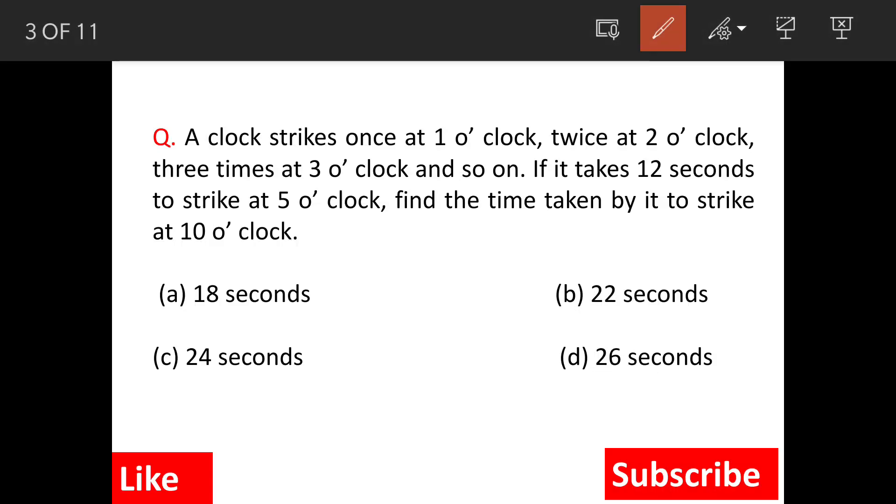A clock strikes once at 1 o'clock, twice at 2 o'clock and 3 times at 3 o'clock and so on. It takes 12 seconds to strike at 5 o'clock. So find out the time taken by it to strike at 10 o'clock.